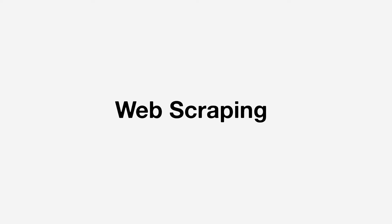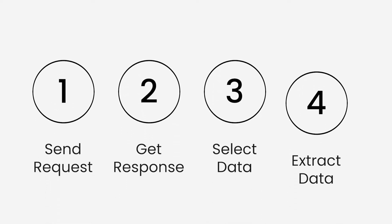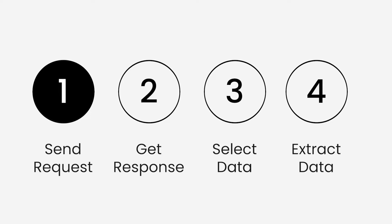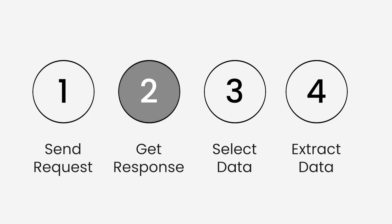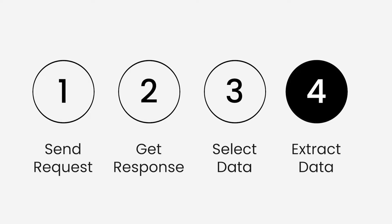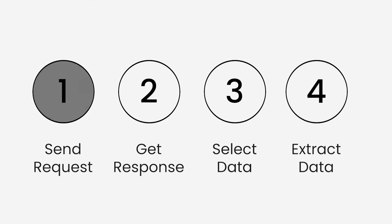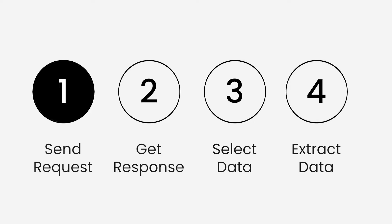In the previous lesson we learned about what web scraping is — extracting information from a website using a program or tool. In this lesson we will learn how it works. We can divide it into four steps: sending a request, getting the response, selecting the data we want, and extracting the data.